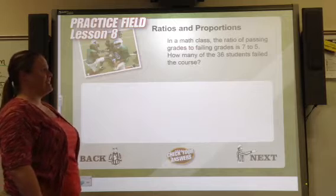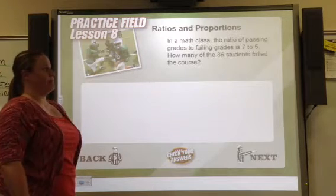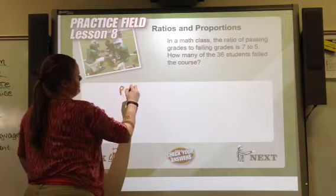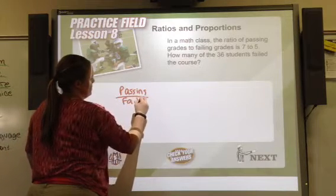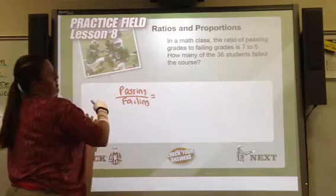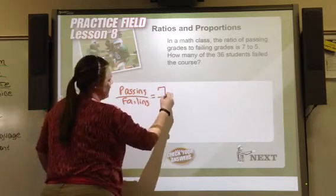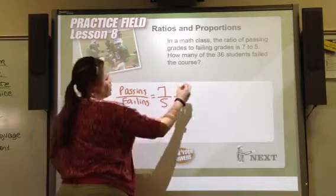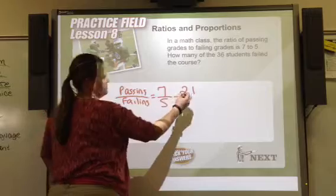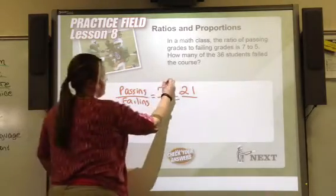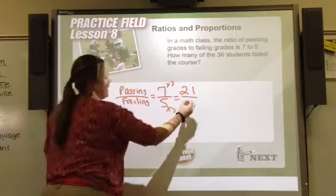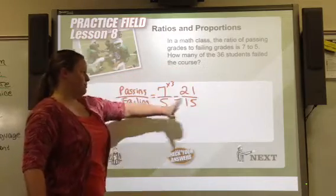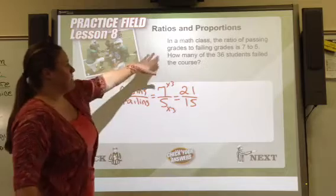Next example: in math class, the ratio of passing grades to failing grades is seven to five — seven kids pass and five kids fail. If 21 kids passed, how do I get from seven to 21? I multiply by three. Do the same to the bottom: five times three equals 15. So if this proportion continues, 21 kids passed and 15 failed.